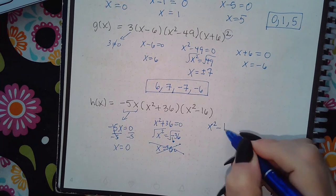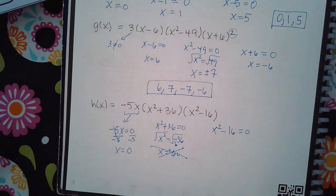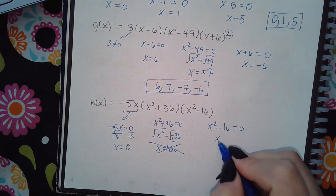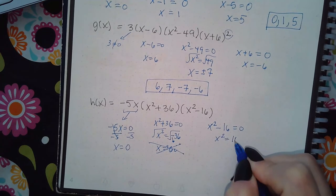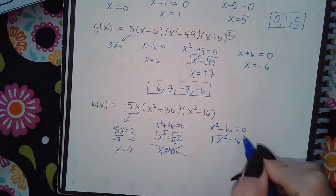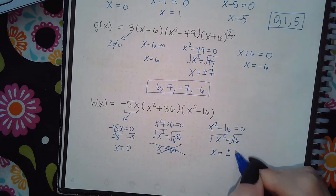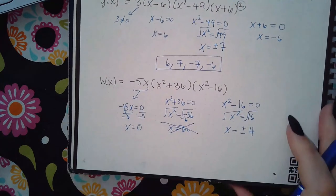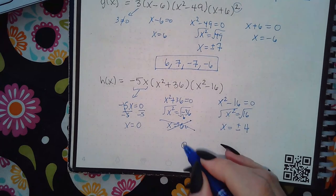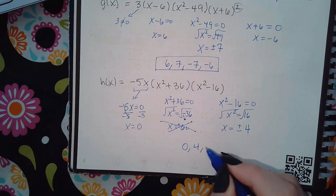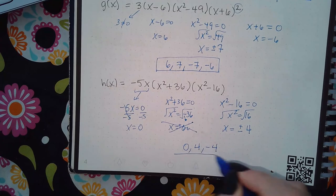So I do add the 16 over, I get positive 16. I do take the square root, I get plus or minus, and the square root of 16 is just 4. So I have three zeros here: the number zero, the number four, and the number negative four.